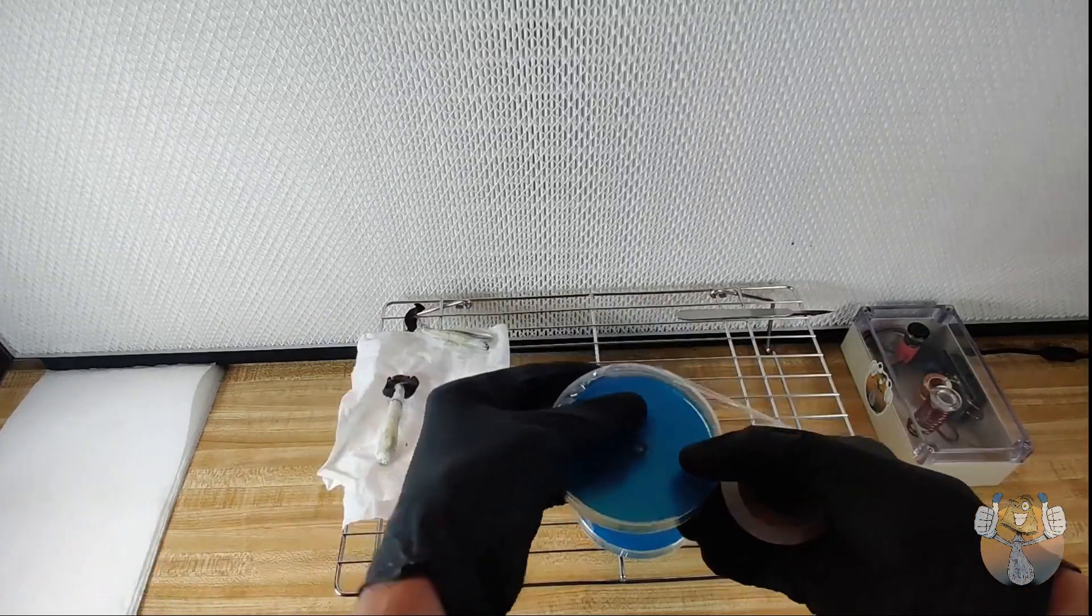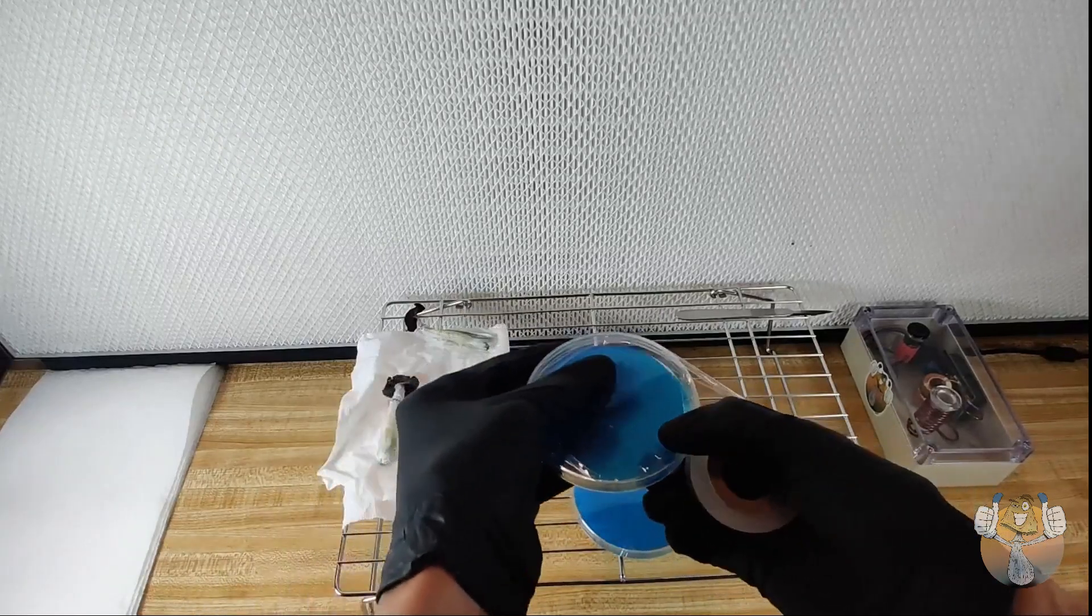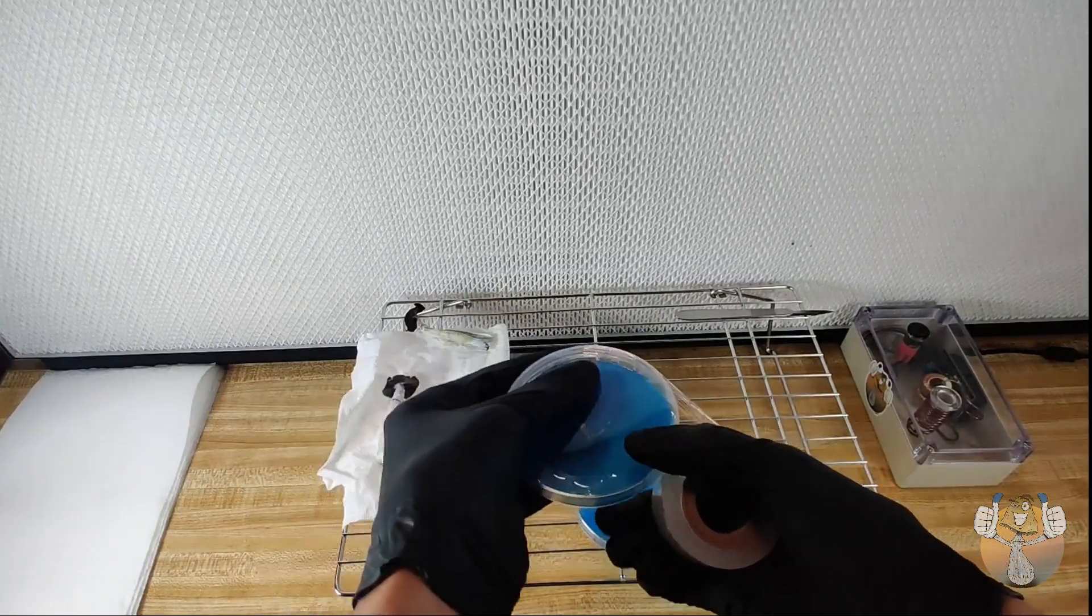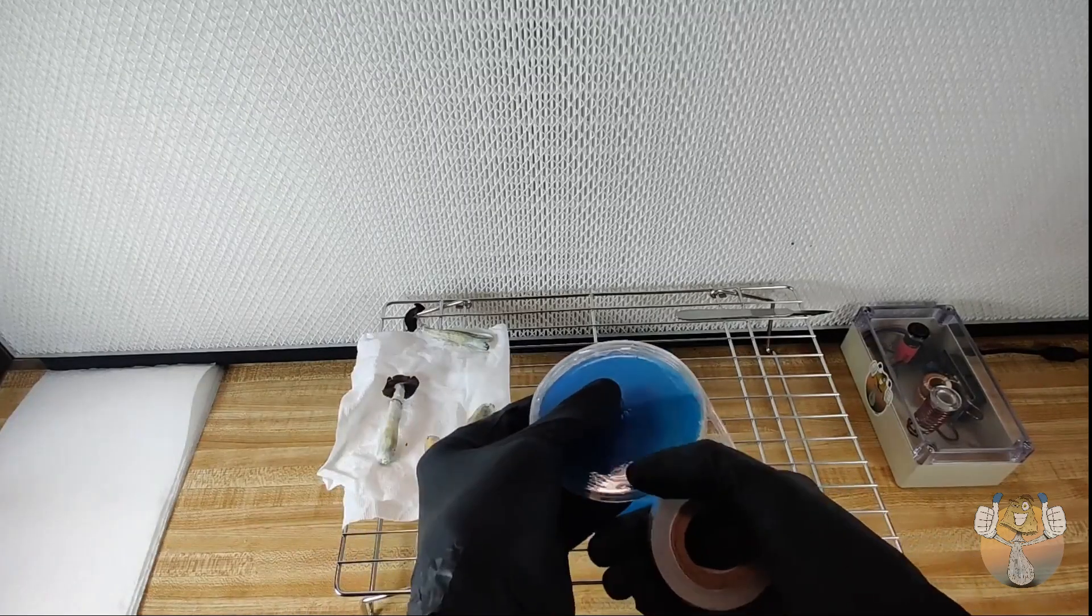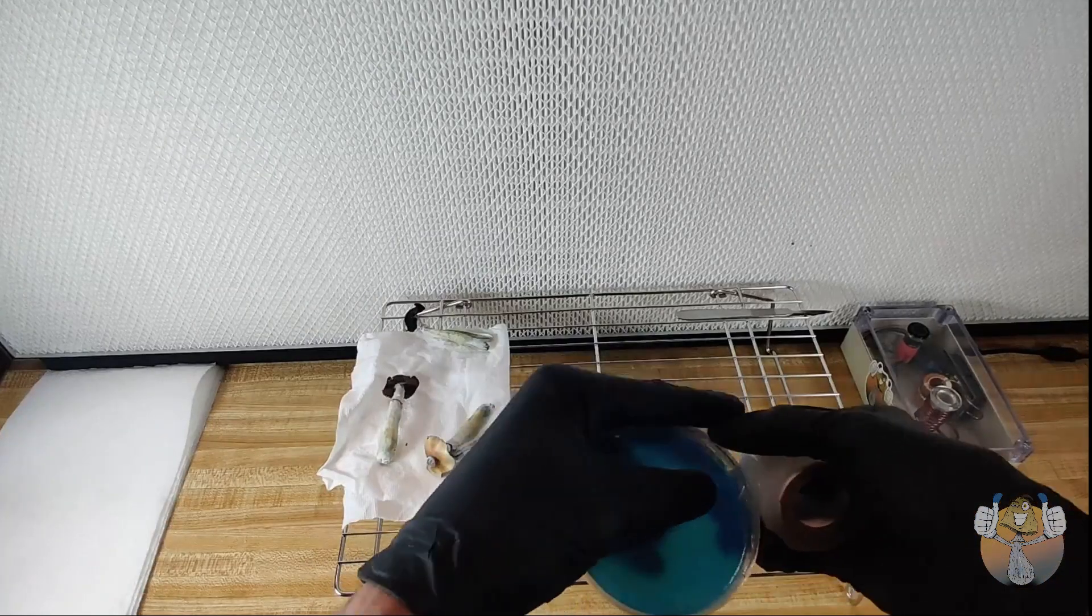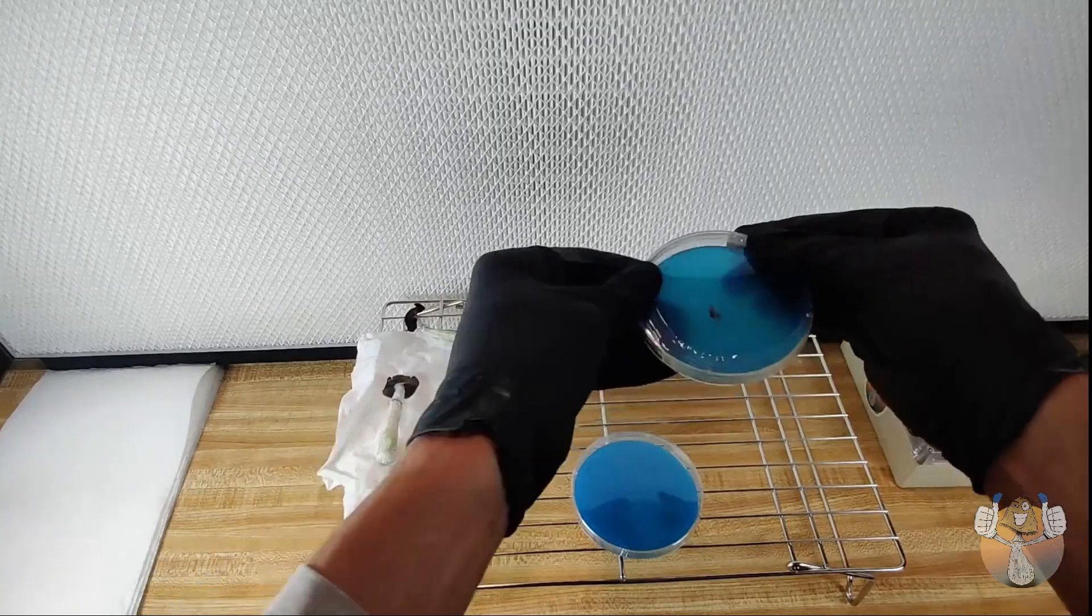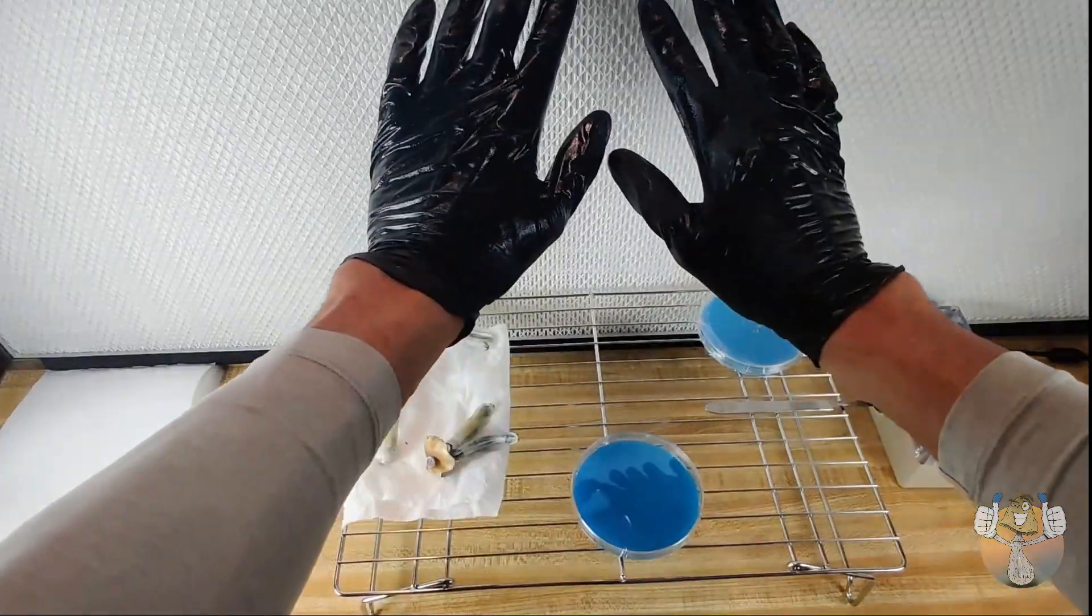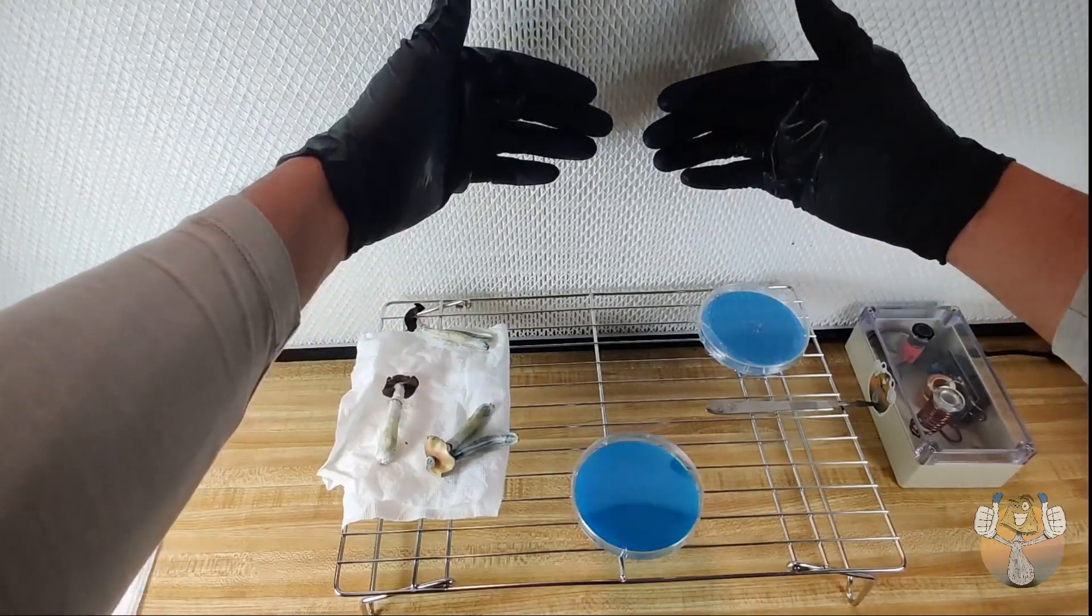And honestly, that is really all that it takes to clone your mushroom fruits. Once you're done, grab your polyfilm tape, tape down nice and snug. Don't forget to label, and you are good to go.